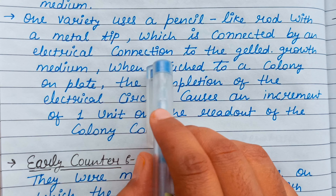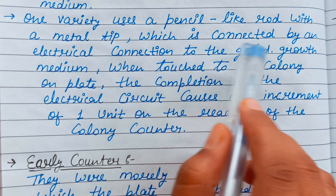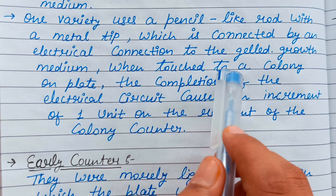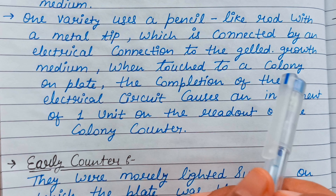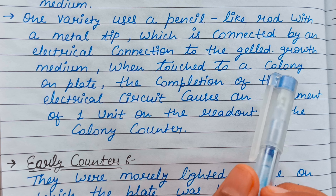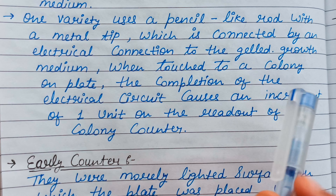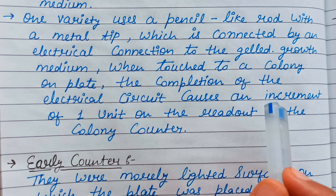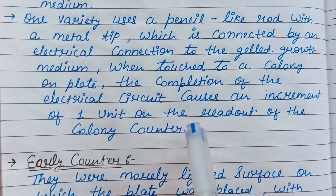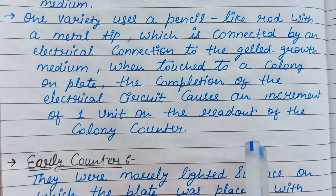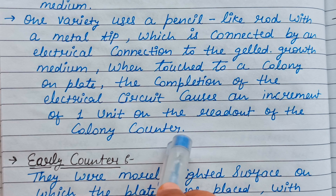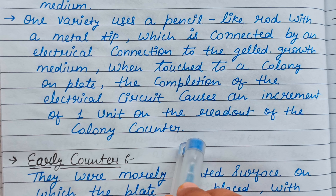Basically, it uses a pencil-like rod with a metal tip which is connected with an electrical connection. The gel medium has colonies growing on it, and the electrical circuit causes an increment of one unit on the readout of the colony counter.